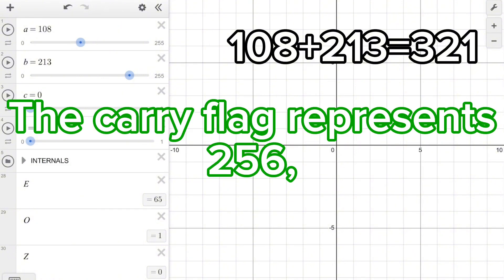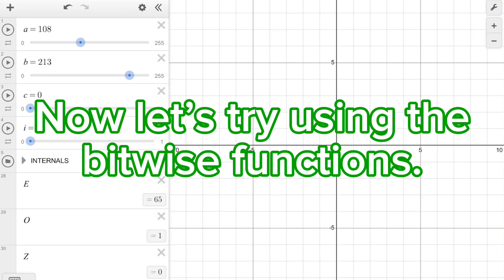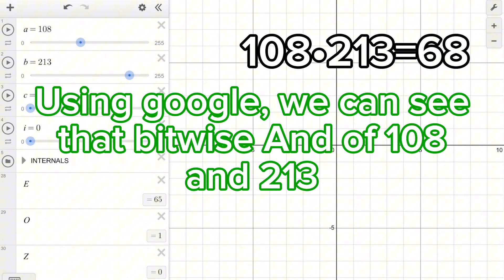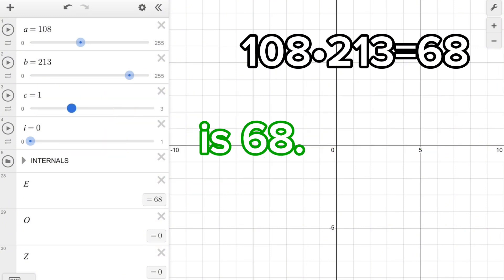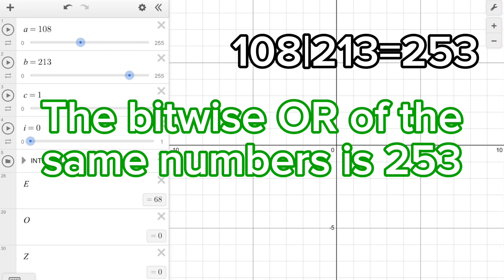Now let's try using the bitwise functions. Using Google, we can see that bitwise AND of 108 and 213 is 68. As we can see, this is what is outputted. The bitwise OR of the same numbers is 253, and as we can see, the ALU is correct.